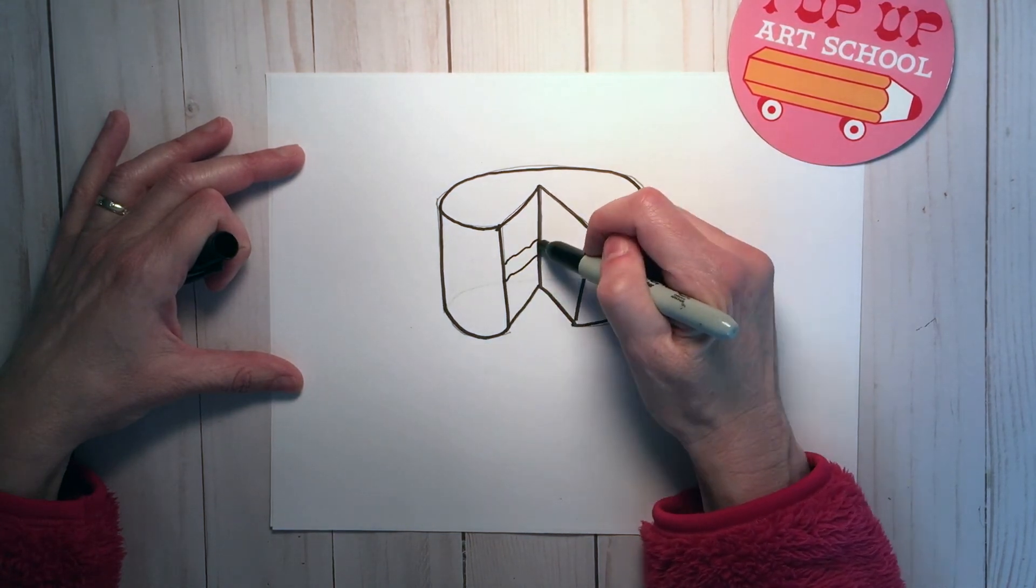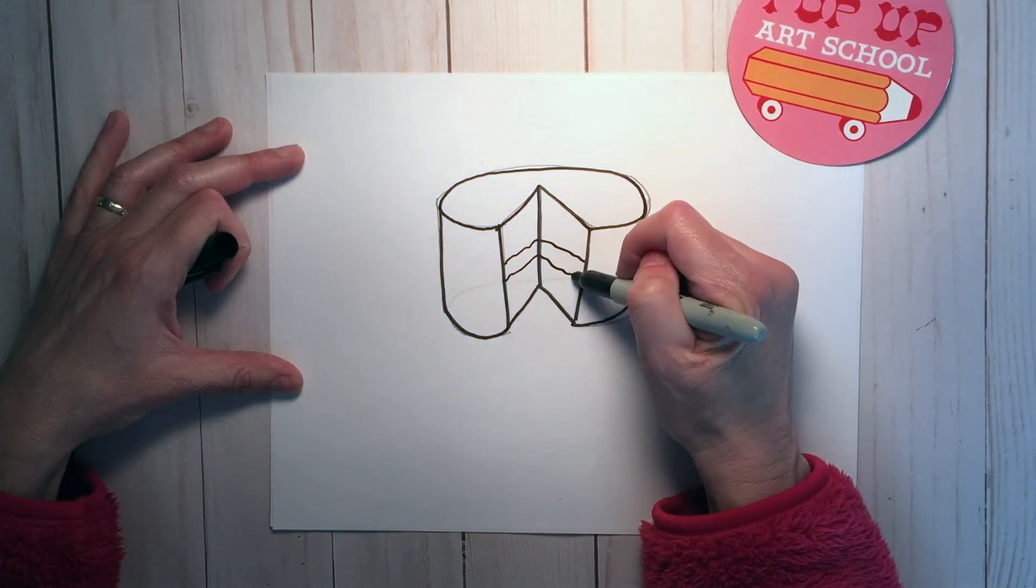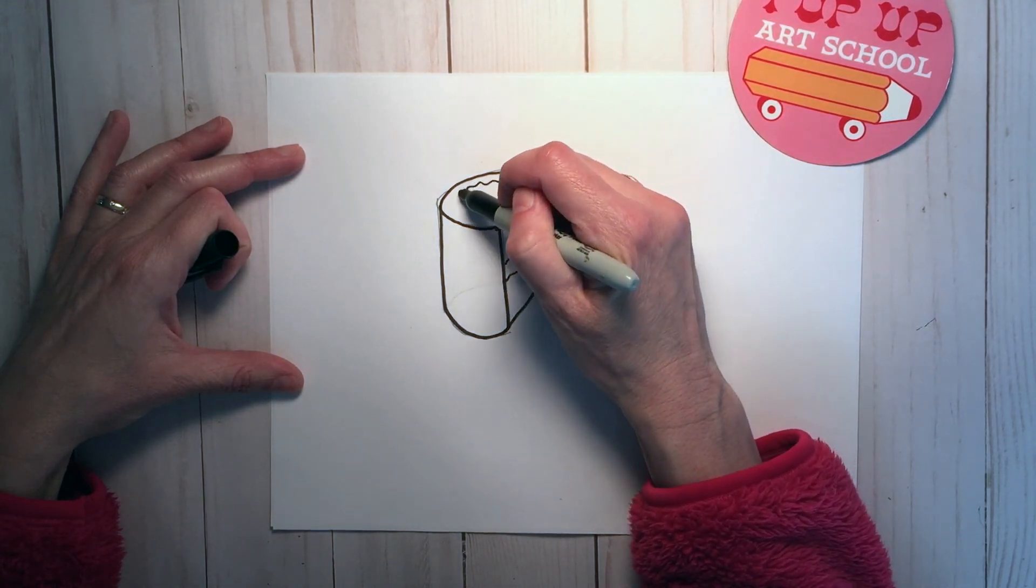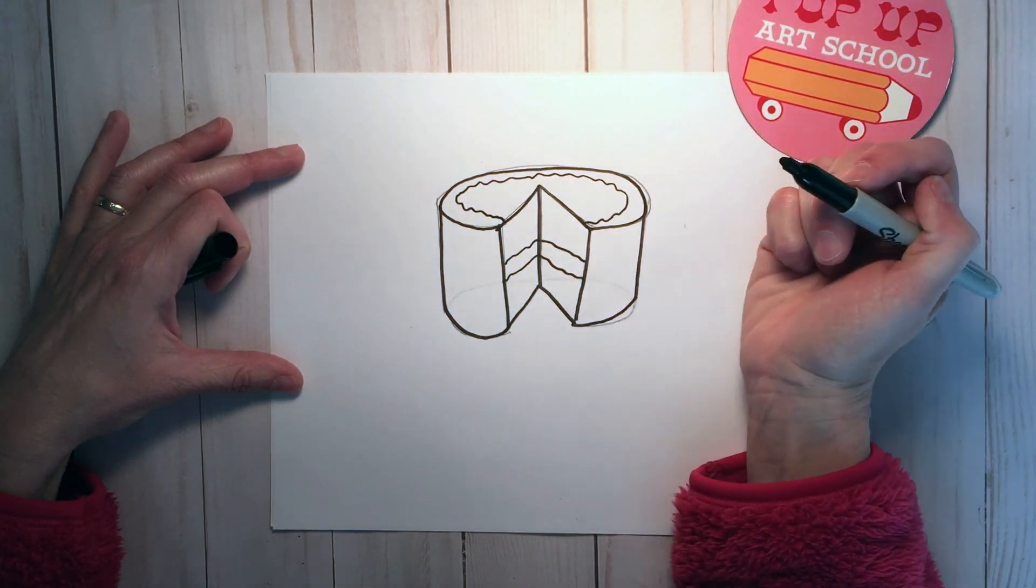I'm going to add a frosting layer in between and those should curve, not curve, but angle downward and then we'll add frosting on the top.